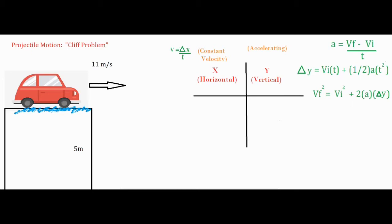The only value we can use on both sides is time, because time is not a vector — it doesn't have a direction, so it can be placed in either of the columns.